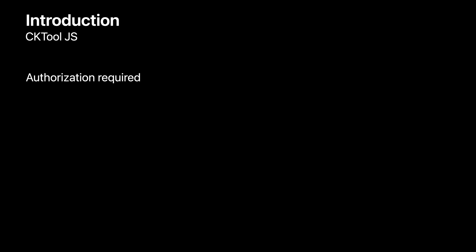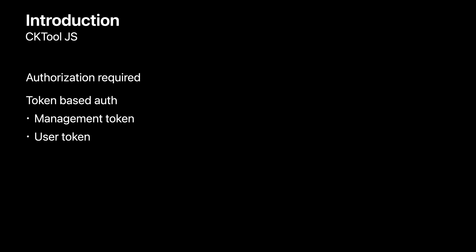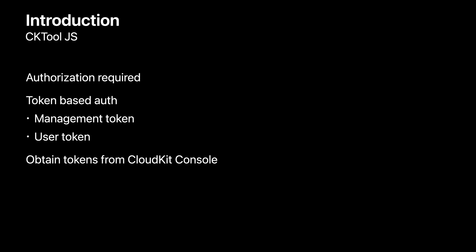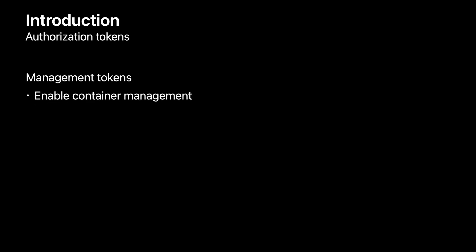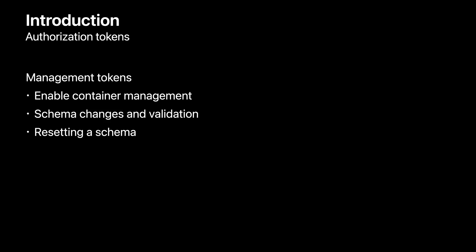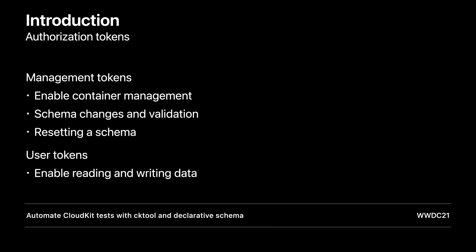Since cktool.js communicates directly with iCloud, it must first be authorized. Depending on the operation that you want to call, you'll either need a management token or a user token. Both kinds of tokens are obtainable from CloudKit console. Management tokens are used to access management operations and are scoped to a team and user. Such operations include enabling schema import and export, schema validation, and resetting the container to production. User tokens are scoped to teams and containers and enable access to private user data within those containers. To learn how to obtain these authorization tokens, as well as continuous integration with CloudKit, check out Automate CloudKit Tests with cktool and declarative schema from WWDC21.